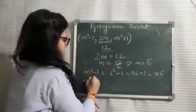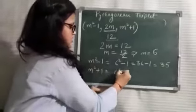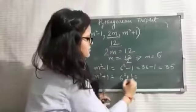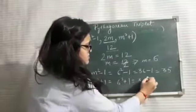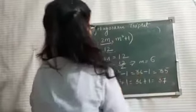Now, M square plus 1, that means 6 square plus 1. 6 square plus 1 means 36 plus 1, and 36 plus 1 is equal to 37.